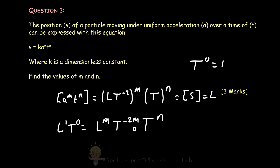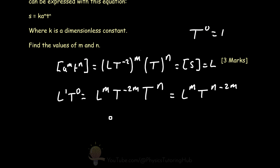We have length to the power of 1 equals length to the power of m, with each dimension within the brackets multiplied by the power m. This gives us length to the power of m times time to the power of minus 2m, multiplied by t to the power of n. When two bases are multiplied together we add the powers, simplifying the right-hand side to length to the power of m times time to the power of n minus 2m.